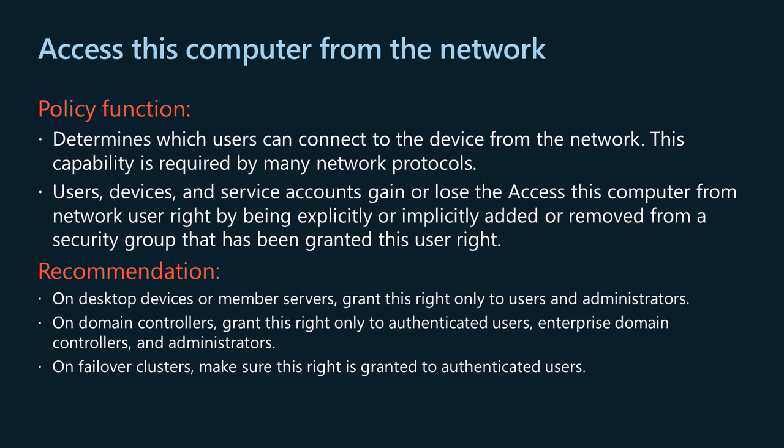By default, user accounts and machine accounts are granted the access this computer from the network user right when computed groups such as Authenticated Users, and for domain controllers, the Enterprise Domain Controllers group are defined in the default domain controllers GPO. On desktop devices or member servers, grant this right only to users and administrators. On domain controllers, grant this right only to authenticated users, enterprise domain controllers, and administrators. On failover clusters, make sure this right is granted to authenticated users. This setting includes the Everyone group to ensure backward compatibility. Upon Windows upgrade, after verifying all users and groups are correctly migrated, remove the Everyone group and use the Authenticated Users group instead.